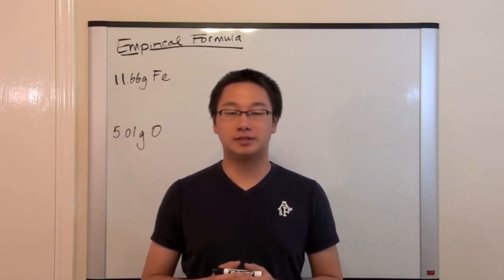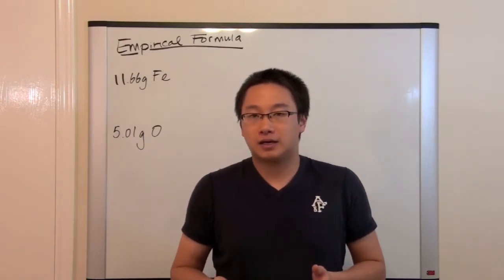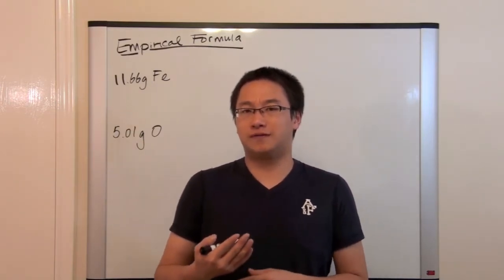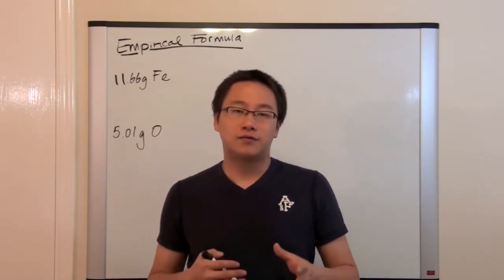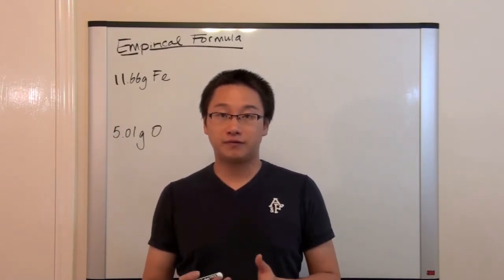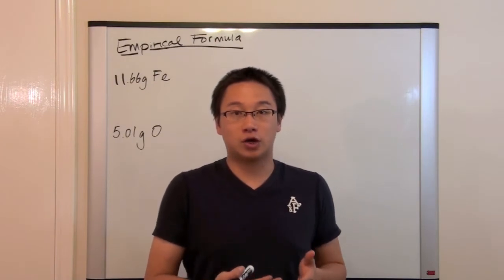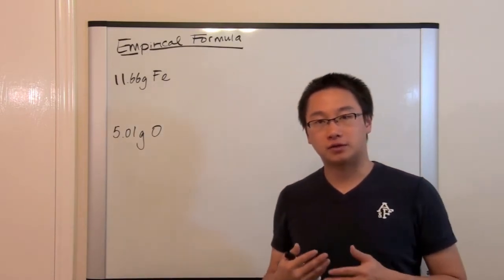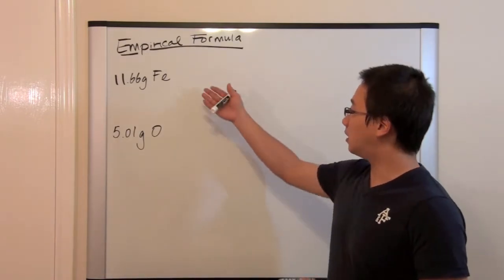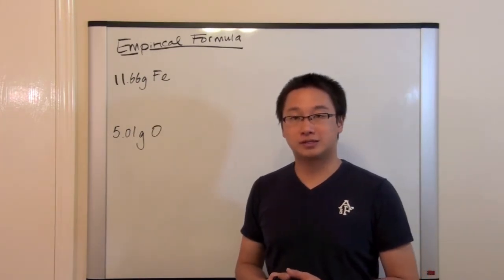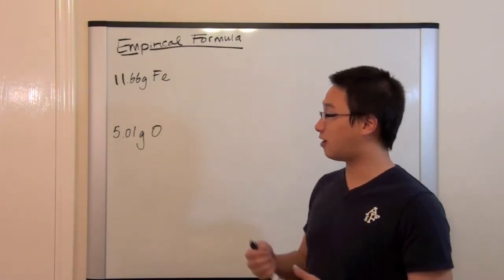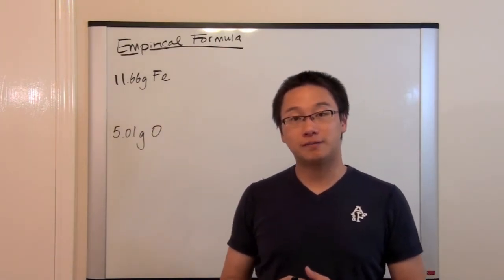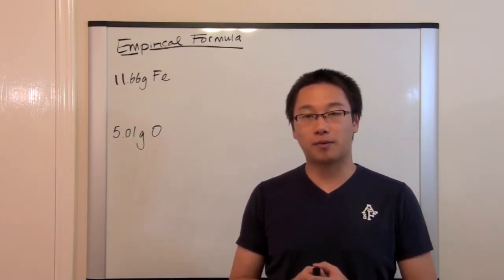Now, a lot of people would get not used to this type of question because it doesn't really follow the procedure, but if you understand what we did in the previous tutorial, then you should have a good understanding on the meaning of each step. Here, we are given the two masses of the element. We have 11.66 grams of iron and 5.01 grams of oxygen. So, based on these two information, we are going to find out the empirical formula.